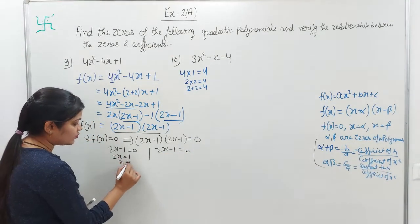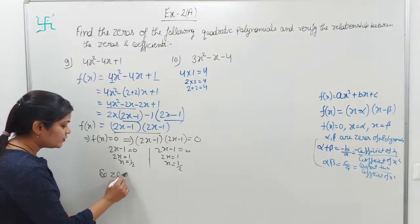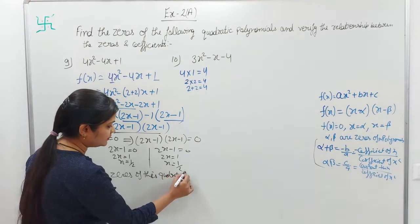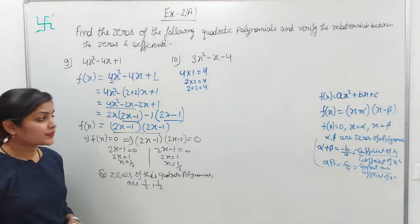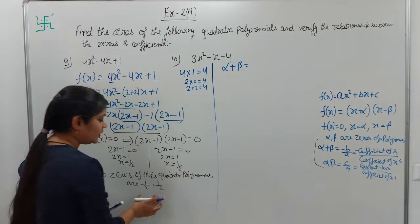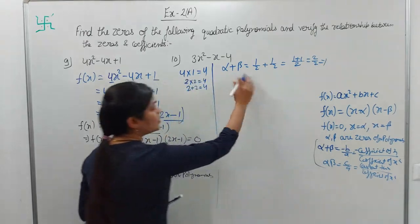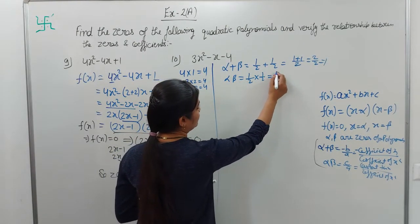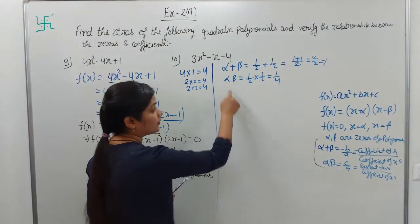So the zeros of this quadratic polynomial are 1/2 and 1/2 — both equal. Calling them alpha and beta, the sum is 1/2 + 1/2 = 2/2 = 1. The product is 1/2 × 1/2 = 1/4. So the sum of zeros of the polynomial is 1, and the product of zeros is 1/4.